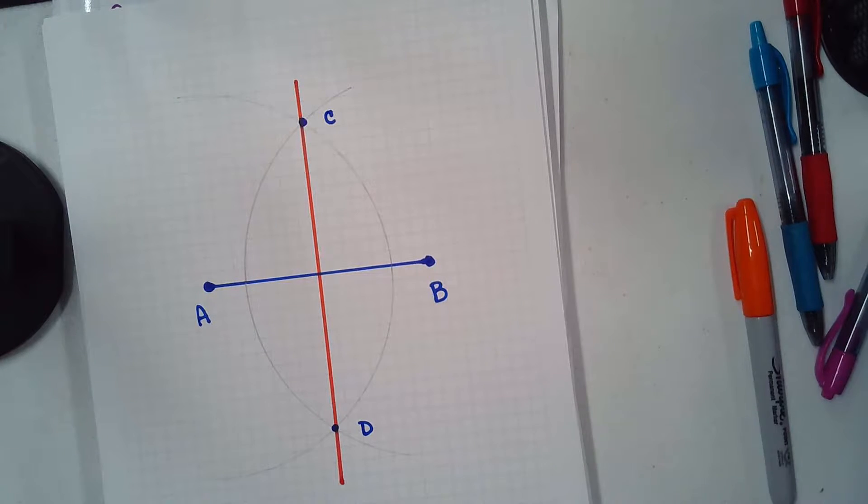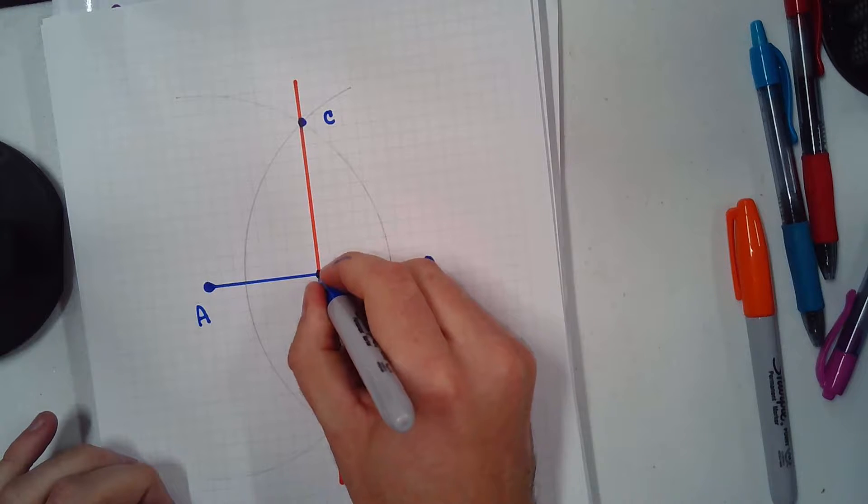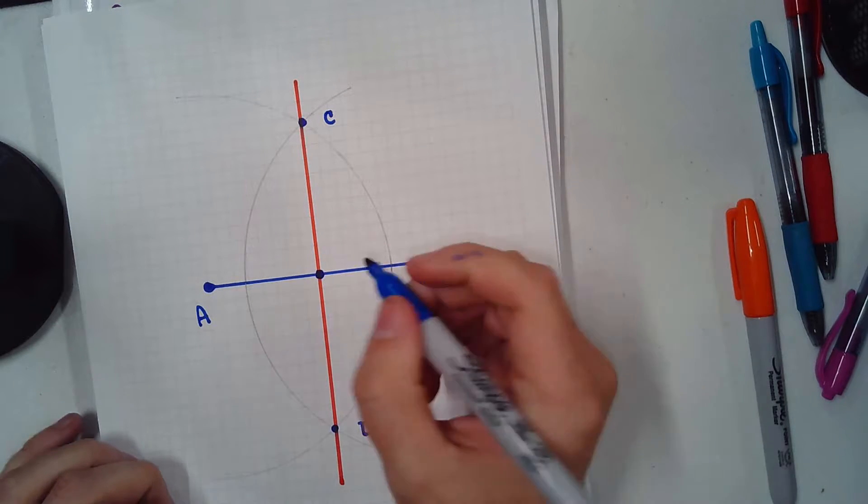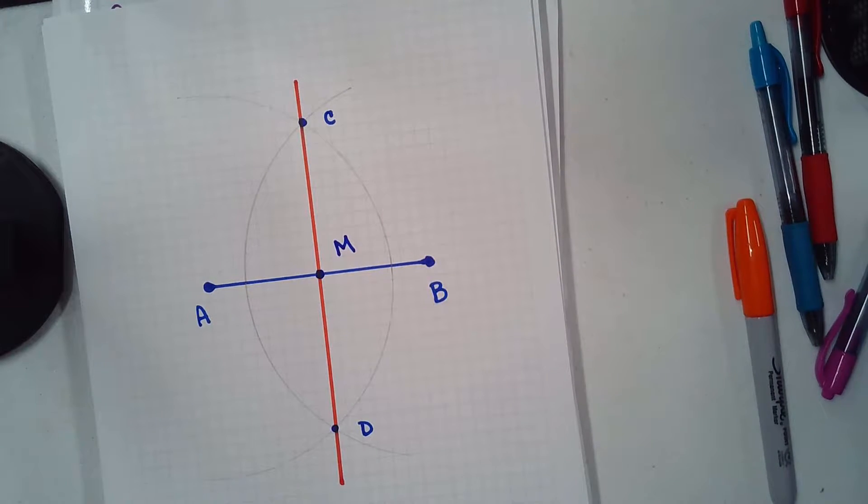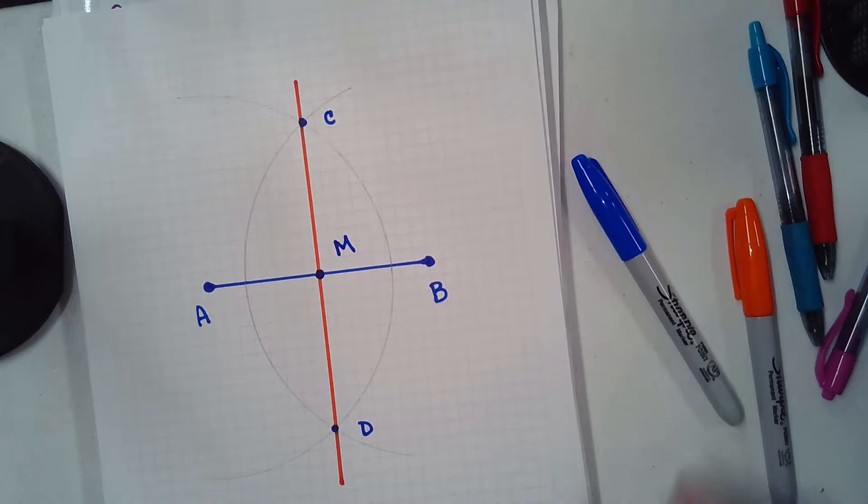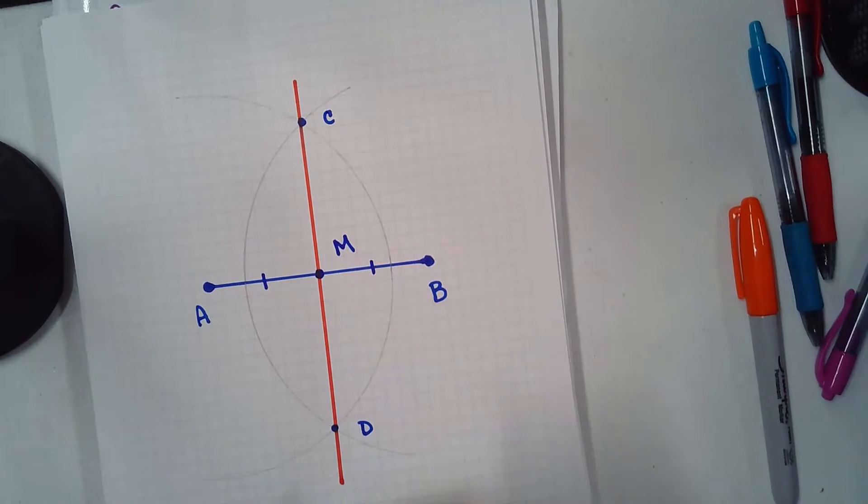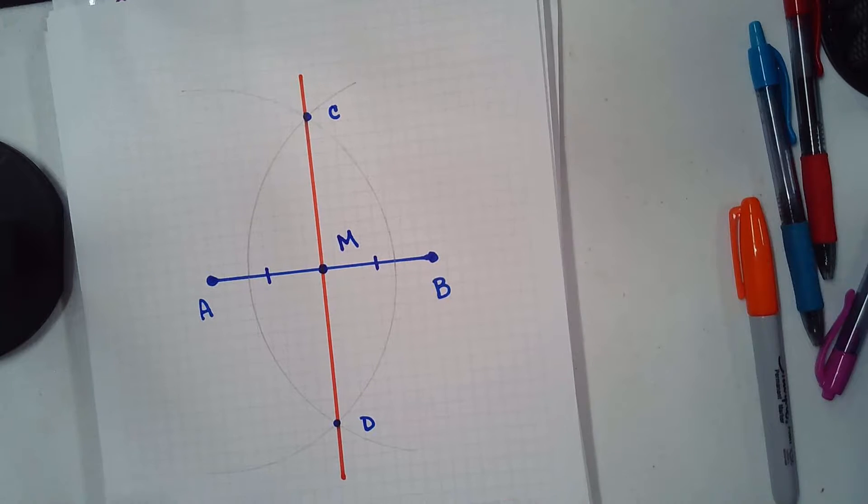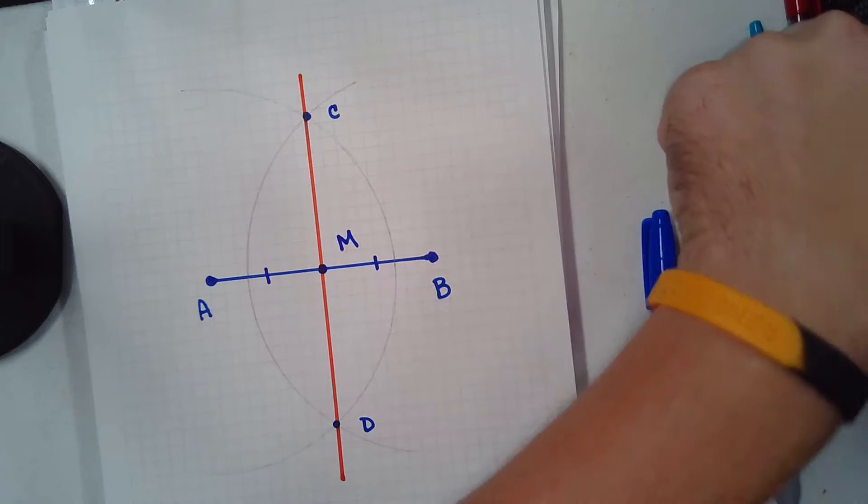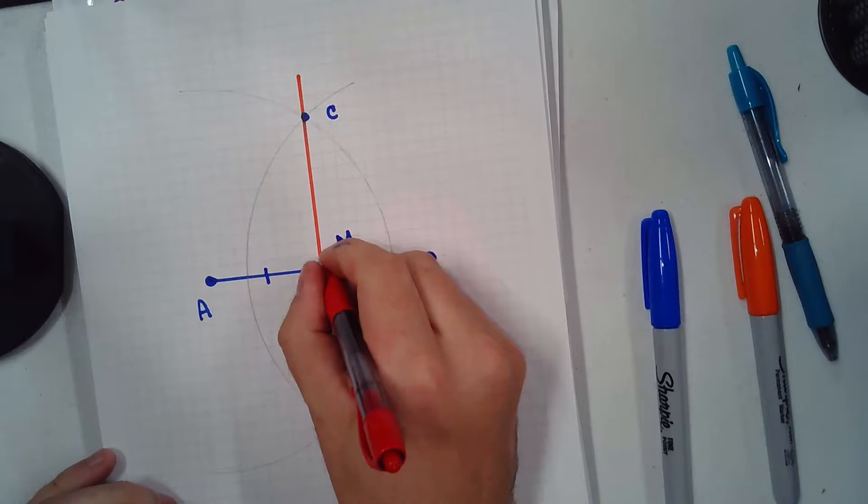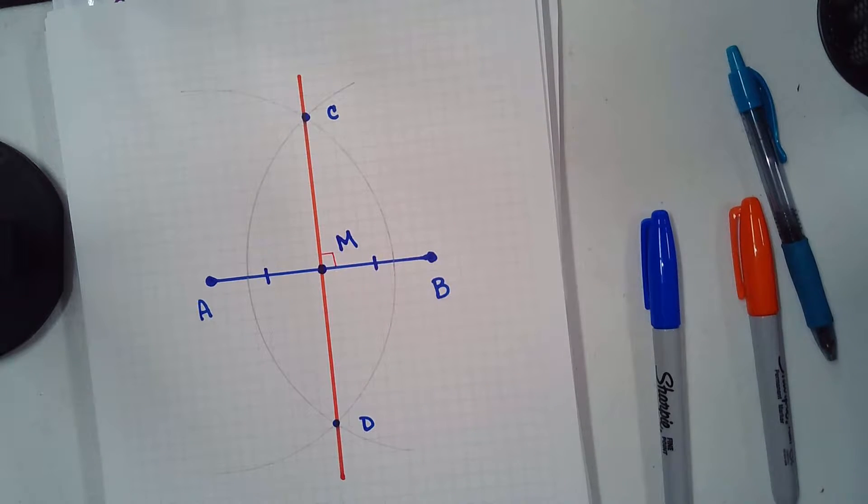All right, so CD is our line segment that we just created. Now, check it out. We're going to put a dot where CD intersects AB. What do you think that is? That's the midpoint. So, call it M. Very good. Now, not only does this hit AB at a midpoint, so put a little line for AB, those little tick marks to show that they're congruent, but it also hits it at a 90 degree angle, which is super dope.